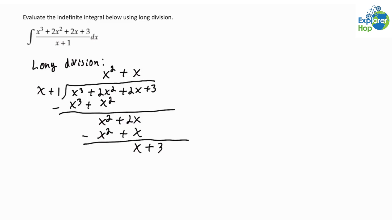And of course, 1 times x gives us x, so we'll write down 1. So 1 times x is x, and 1 times 1 is 1, so plus 1. Then we subtract, and this gives us 2, which is the remainder.